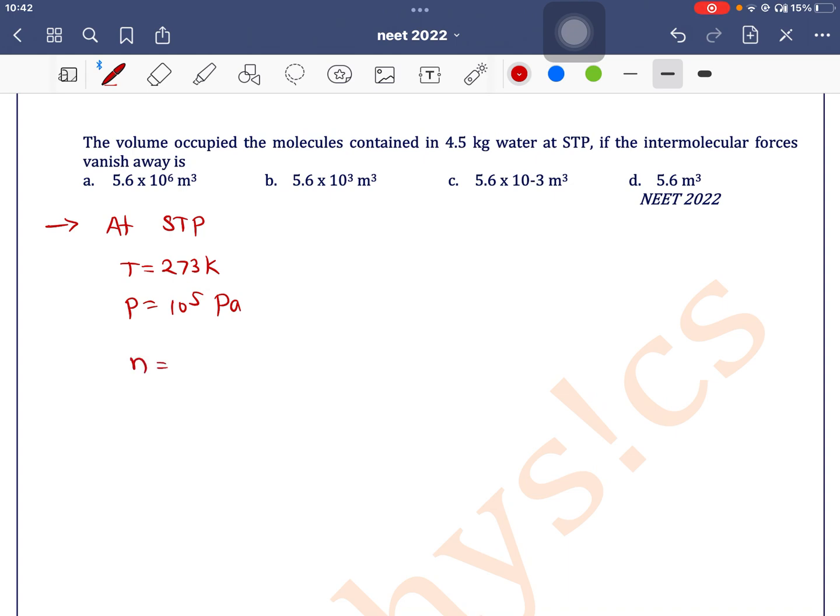N is equal to given mass divided by molecular mass. Mass given is 4.5 kg. For water, molecular mass is 18 into 10 to the power minus 3 kg, which is equal to 250. Right. So if we use equation PV is equal to NRT.